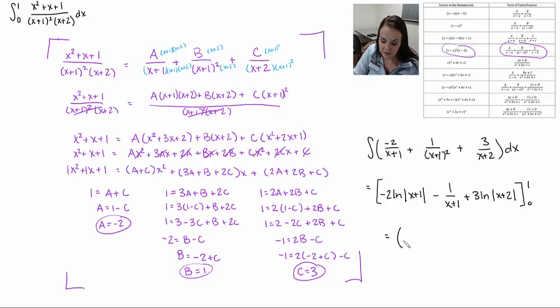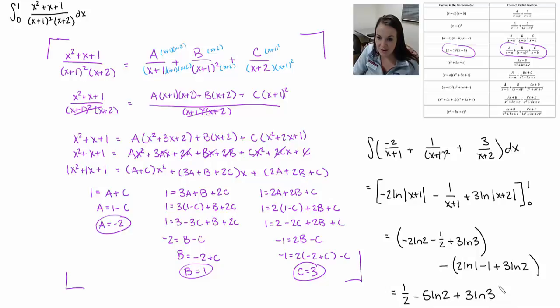And when I plug all that in, I end up getting, let's see, negative 2 ln of 2 minus 1 half plus 3 ln of 3. I'm running out of room, so I'm going to write this down here. Minus 2 ln of 1 minus 1 plus 3 ln of 2. And when I combine the like terms, I end up getting 1 half minus 5 ln of 2 plus 3 ln of 3.